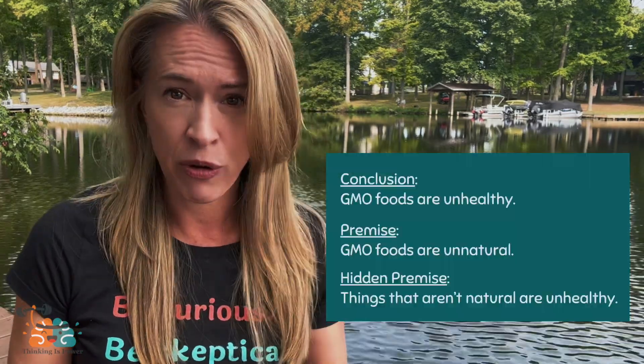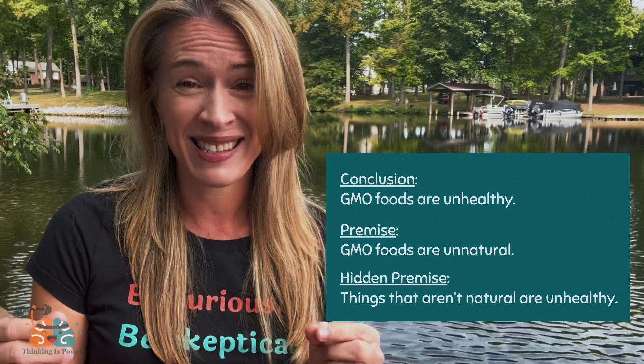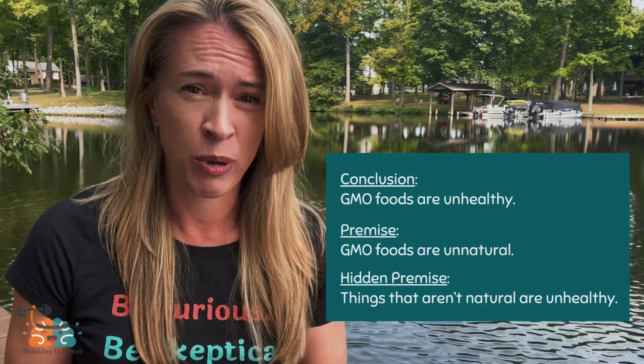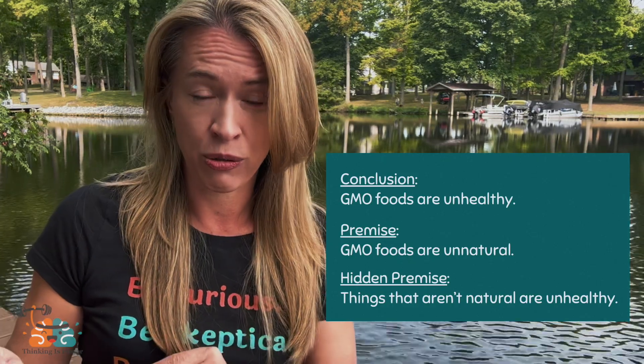For example: 'GMO foods are unhealthy because they aren't natural.' The conclusion is that GMO foods are unhealthy, and the stated premise is that they aren't natural. This argument has a hidden premise — things that aren't natural are unhealthy — which commits the appeal to nature fallacy. We can't assume something is healthy or unhealthy based on its presumed naturalness. Arsenic and botulinum are natural, but neither is good for us. By explicitly stating the hidden premise and recognizing the flaw in reasoning, we can see that we should reject this argument.